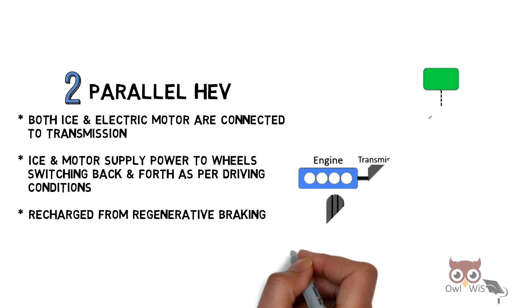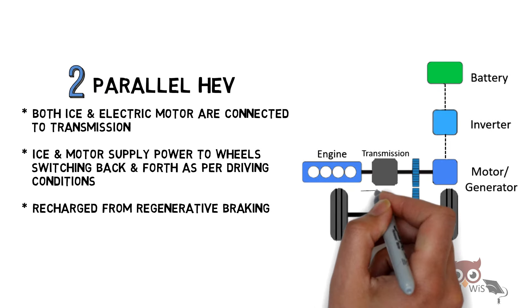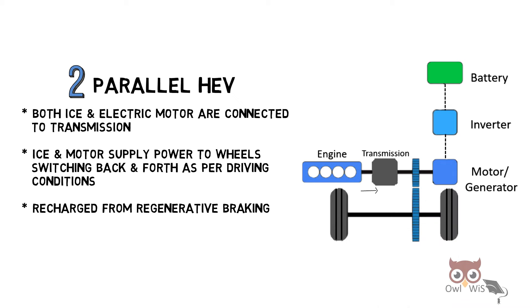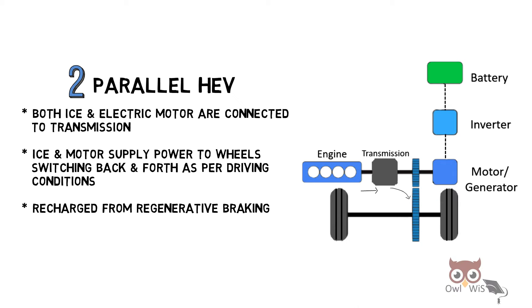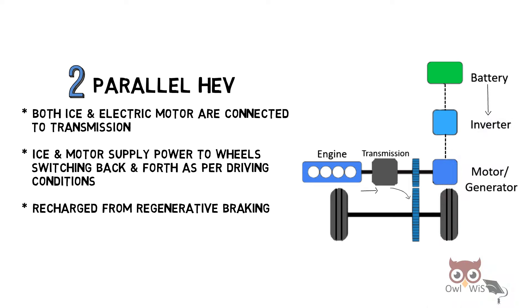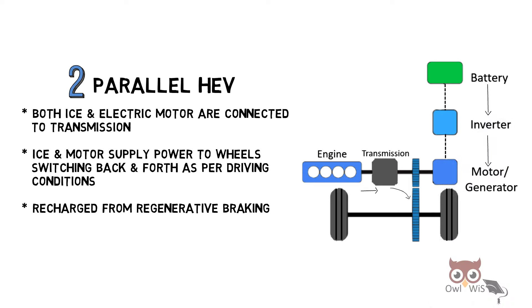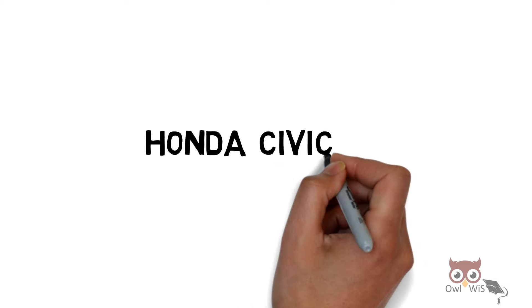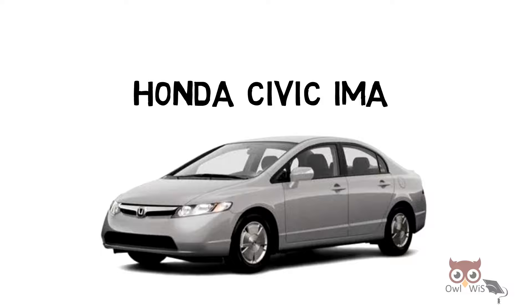As you can see, the power flow occurs from engine to transmission which drives the wheels, and then from battery to inverter to motor which also drives the wheels. Honda Civic IMA is an example of parallel HEV.